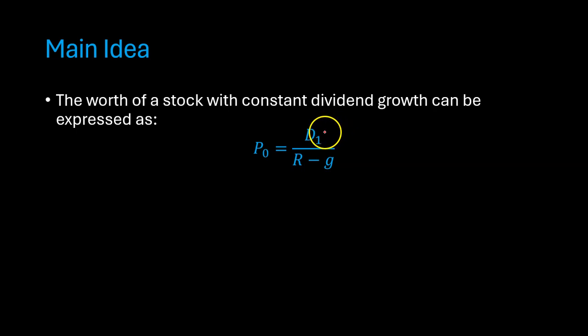What the dividend discount model is essentially saying is that if you have some expected dividend in one year from now, if you know the rate at which dividends are expected to grow, and if you know what is the rate of return that equity holders require on their equity investment, you can figure out the price.